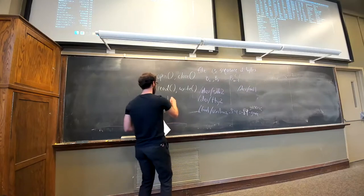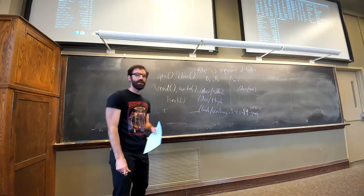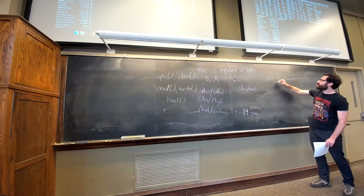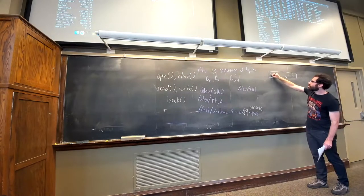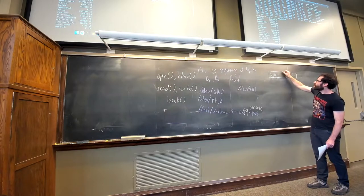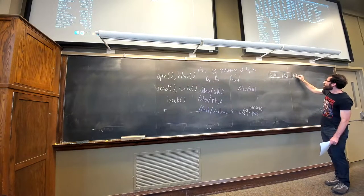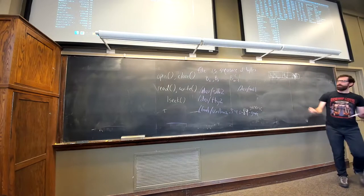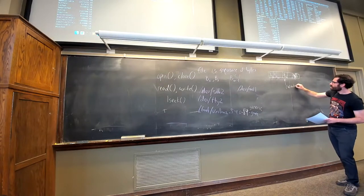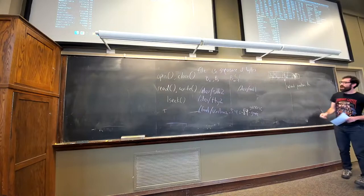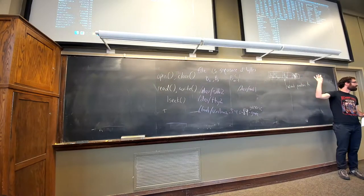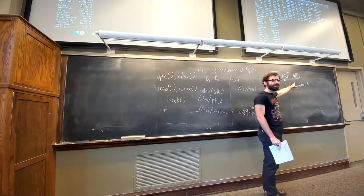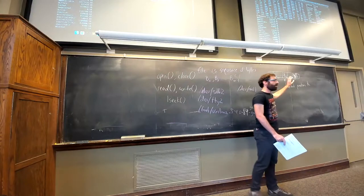There is also a function called lseek. When a file is opened, the kernel maintains a current position — an index into the sequence of bytes — and we can use lseek to change the current position we're reading from. We're just maintaining information about where in the file we are currently reading.